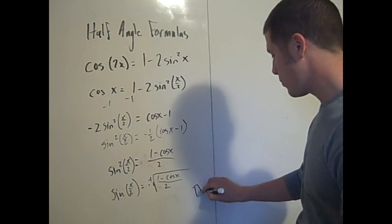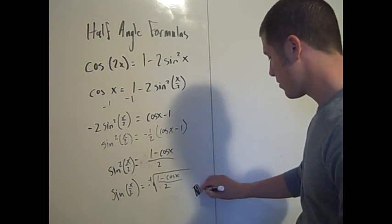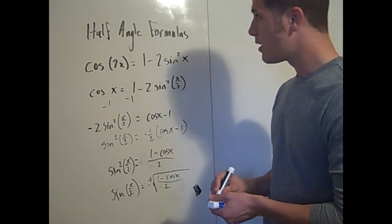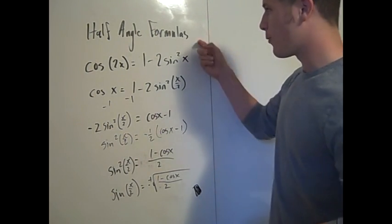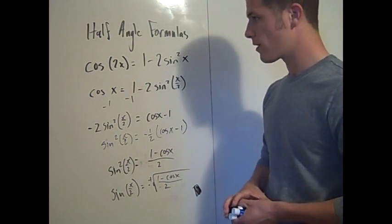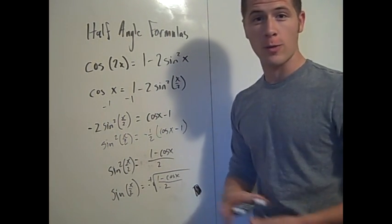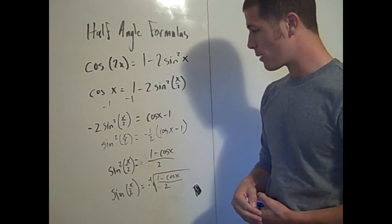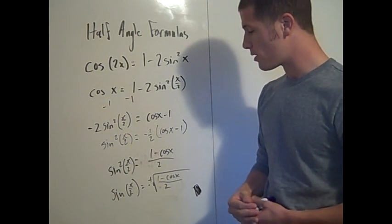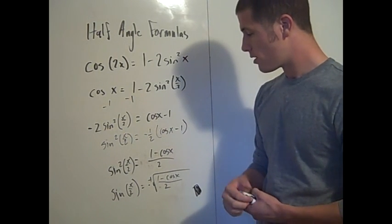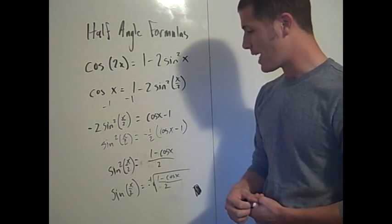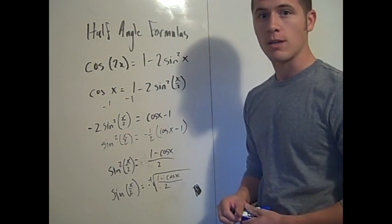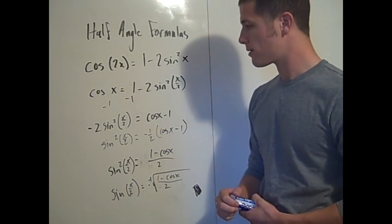That concludes the proof. Now we know the half angle formulas and the double angle formulas, and you'll be able to work trigonometric identity problems much more easily by knowing these things.